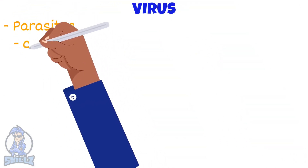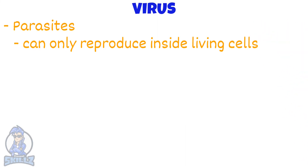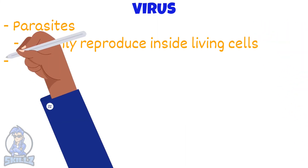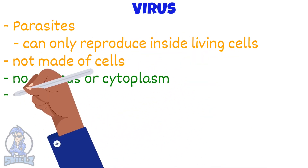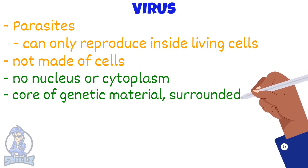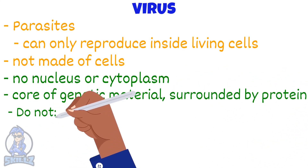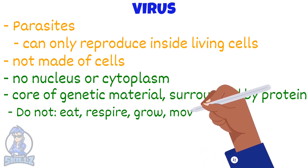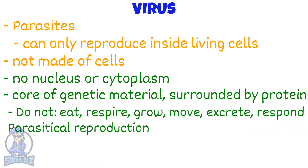All viruses are parasites, meaning they can only reproduce inside living cells. A virus, which is only 0.01 micrometers, is not made of cells. They have no nucleus or cytoplasm and are composed of a core of genetic material surrounded by a protein coat. Viruses don't feed, respire, excrete, move, grow or respond. They only reproduce, and that also parasitically.